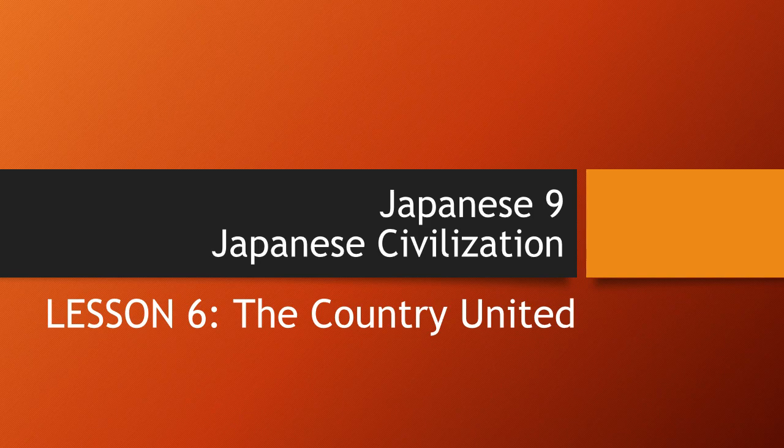Lesson 6: The Country United. This is a very crucial chapter because it really sets up the rest of Japanese history. We're at a middle point in the course of Japanese civilization, and everything can be characterized as pre-Lesson 6 and post-Lesson 6. So Lesson 6 is a very important period for Japanese civilization.